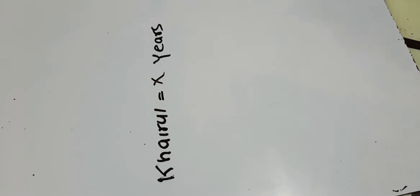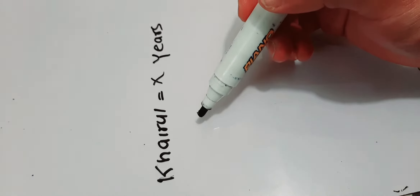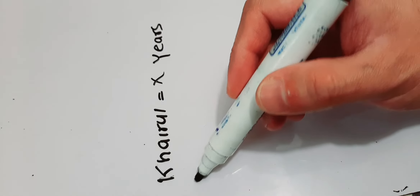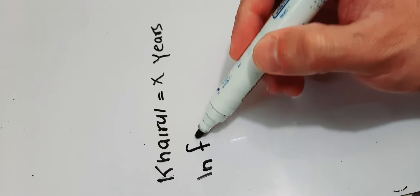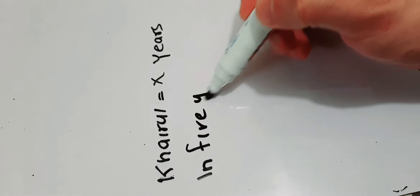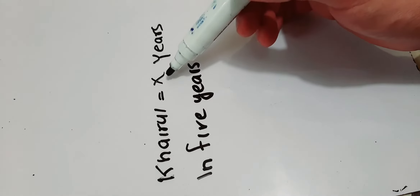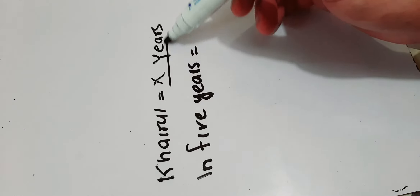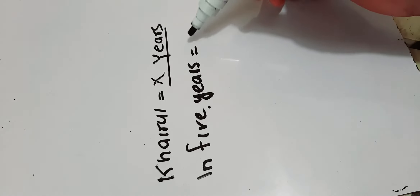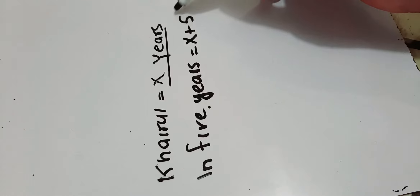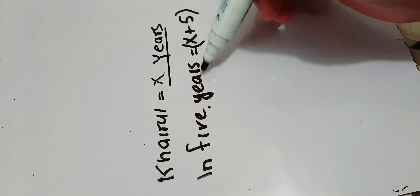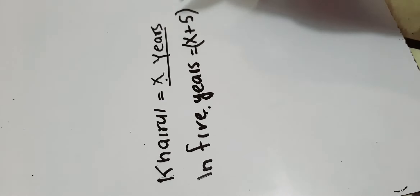Now, Khairul's uncle is 4 times as old as Khairul will be in 5 years. Write here: in 5 years time. Suppose today Khairul is x years old, so in 5 years he will be x plus 5 years. Obviously, you will add 5 years to his present age to get his age after 5 years.